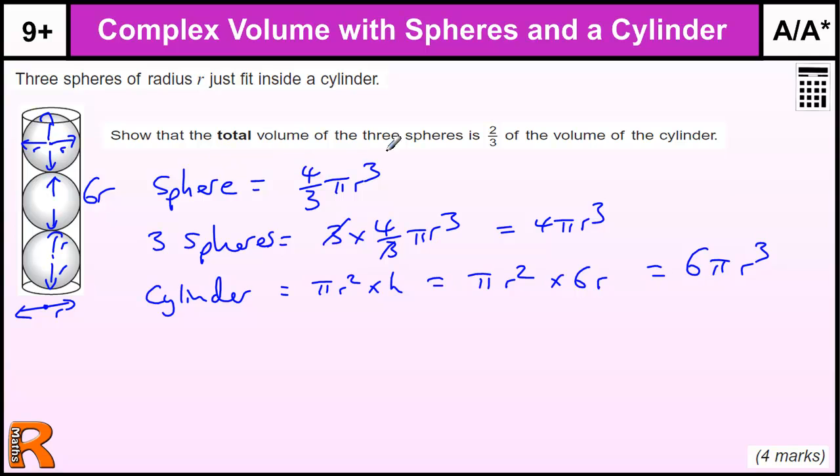The volume of the three spheres, we're trying to show, is two-thirds of the volume of the cylinder. The spheres divided by the cylinder should equal two-thirds. The spheres are 4 pi R cubed, and we're dividing by 6 pi R cubed. The R cubed's cancel, the pi's cancel, leaving us with 4 over 6, which cancels down to two-thirds - the answer for four marks.